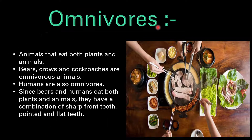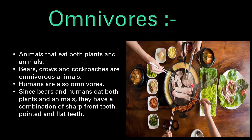Next are omnivores — animals that eat both plants and animals. For example, bears, crows and cockroaches are omnivorous animals. Humans are also omnivores. As we can see in this image, some vegetables and some meat are shown, which is eaten by us humans. Since bears and humans eat both plants and animals, they have a combination of sharp front teeth, pointed teeth and flat teeth.